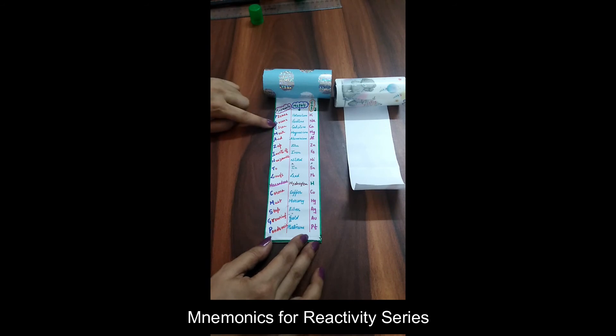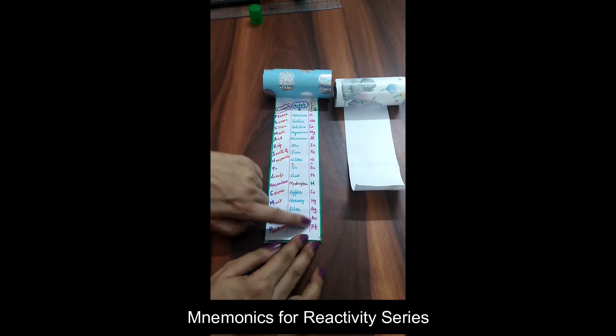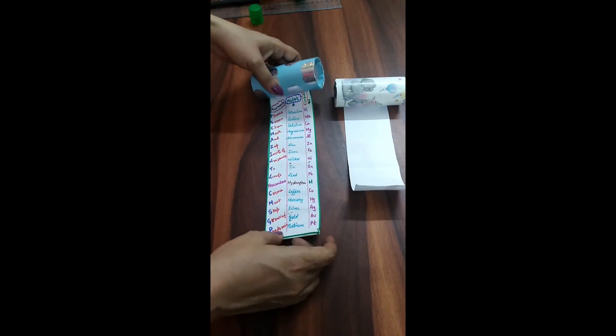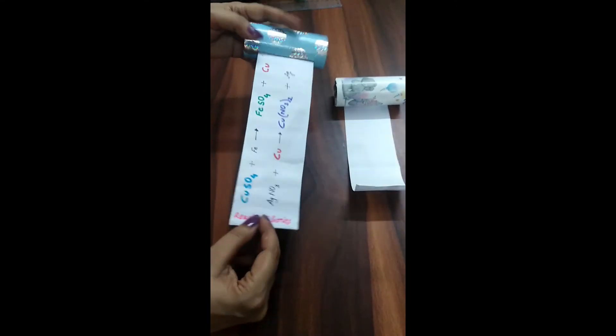So in each word the first letter corresponds to the first letter of the name of the metal. So this way you can have mnemonics on one side, name of the metals, and then you can have their symbols. You can make a similar kind of handy setup for any kind of topic in which you face difficulty.